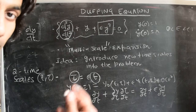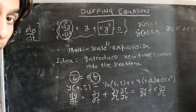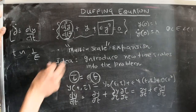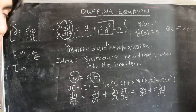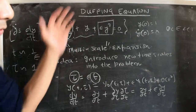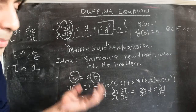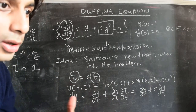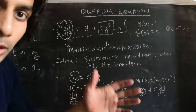Why do we take tau to be epsilon times t? Because, as we discussed, when looking at the regular perturbation expansion, for t of the order of 1 over epsilon, the secular term becomes dominant. So we're looking for a particular timescale tau which becomes of order 1 when t becomes of order 1 over epsilon — in other words, if t is 1/epsilon, then tau is 1. This tau is sometimes called a stretched coordinate, or a long timescale of the problem.